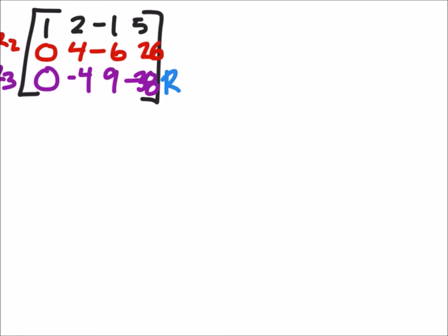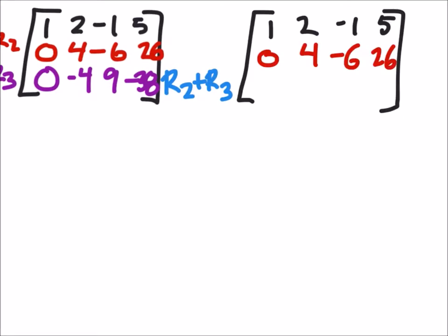I'm going to take row 2 and add it to row 3, which is going to give me a new row 3. All right. So, let's... Yes. There's that. If I take row 2 plus row 3, the 0... Well, 0 plus 0, that's pretty easy, is 0. 4 plus negative 4 is 0. Negative 6 plus 9 is 3. And 26 plus negative 38 is negative 12.